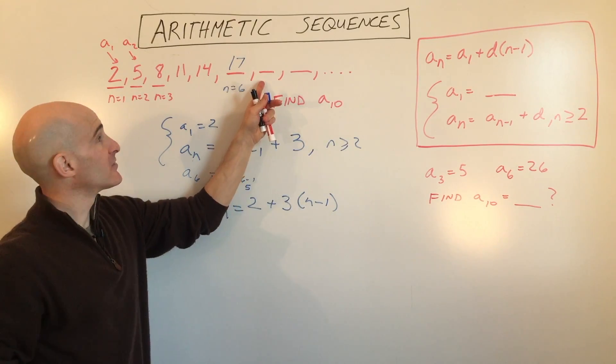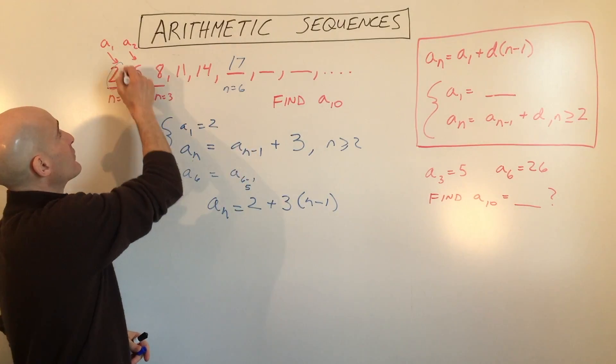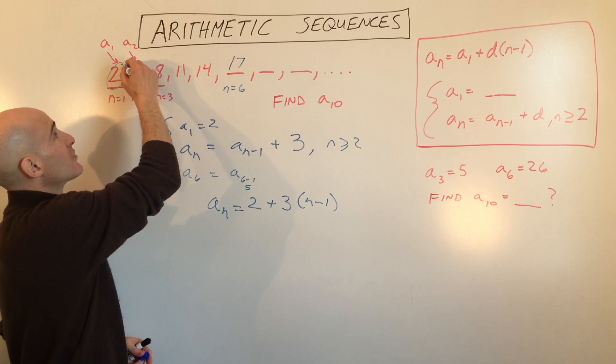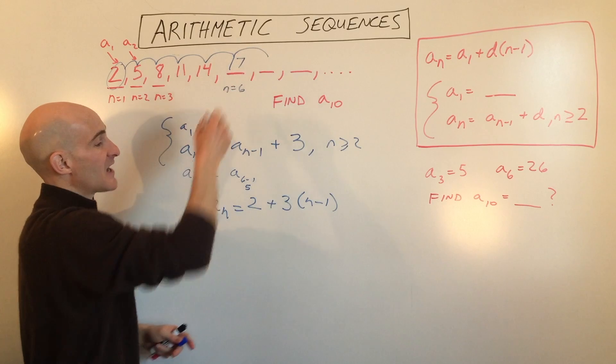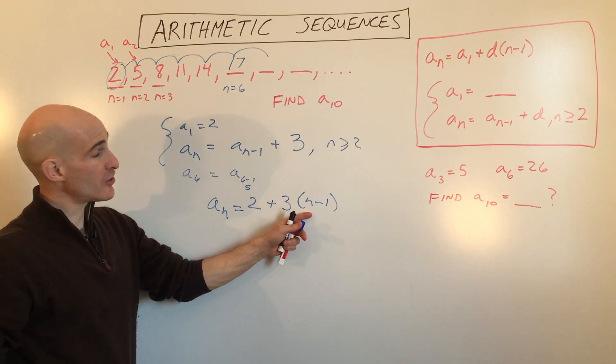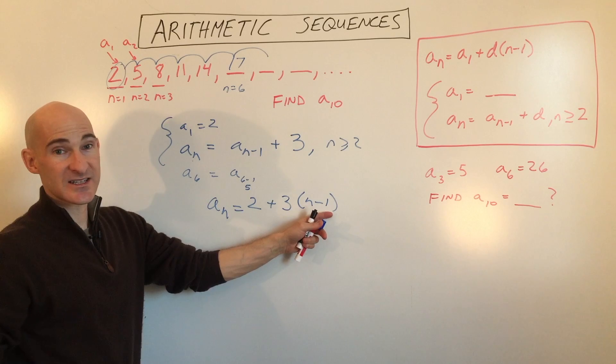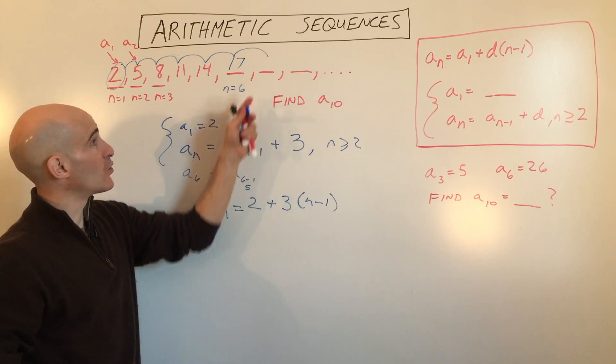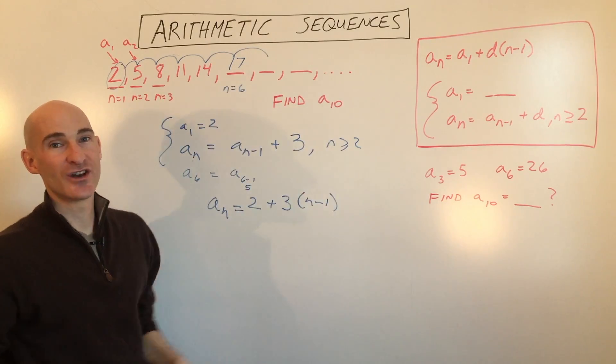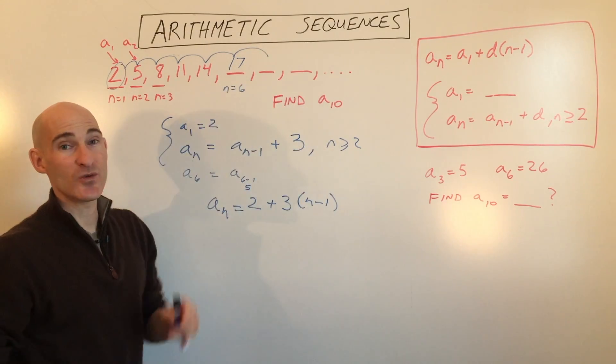Well, if you want to find the 7th term, and you're already at the first term, you have to add 3 once, twice, 3 times, 4 times, 5 times, 6 times, so even though it's the 7th term, we're only adding 3, 6 times, to 2. So that's why it's n minus 1. It just takes one less addition of the common difference to get to the term that you want.